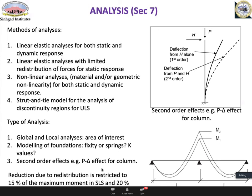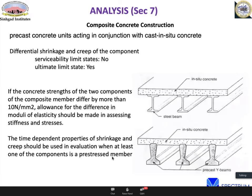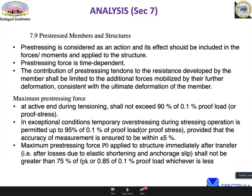The code allows moment redistribution up to 15% at the serviceability limit state and 20% at ULS of the maximum moment. The effect of differential shrinkage must be considered in composite concrete construction. Prestress is treated as a force acting on the structure — the maximum prestressing force applied during tensioning should not exceed 90% of the 0.1% proof stress, or may go temporarily to 95% provided gauge accuracy is within plus or minus 5%.